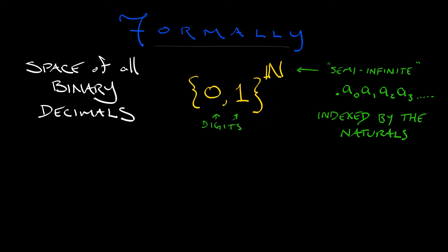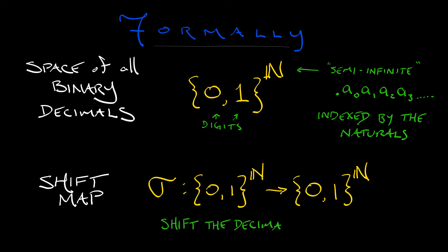Okay, now that is going to be what we work with, our numbers if you will. And what we're going to do to those numbers is we're going to shift the decimal point. We're going to do this via a shift map σ that has domain this space of binary decimals and has target this space of binary decimals. And what it does is it just shifts the decimal point over and drops the zeroth digit, it drops that a_0 term, just like we saw in that previous example.